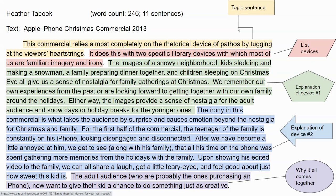Irony is the next device I explain, and that one is in blue. The irony is what makes the audience surprised at the end — it causes unexpected emotion, like 'isn't that sweet?' We're watching a teenager who seems very disconnected from everyone because of his phone, and then it turns out he was doing something we didn't expect, which tugs at our emotions even more and ends up being very sweet. Because the audience is adults purchasing iPhones, there's a reason all of this works — the nostalgia, the family, Christmas, and the teenagers. I wrapped it up with one sentence explaining how it all comes together.